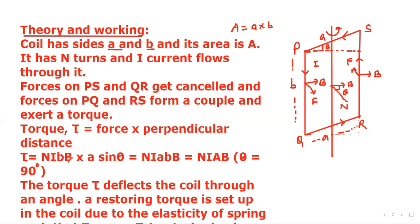So tau equals NIbB times a sine theta. Theta is taken as 90 degrees, so NIaB times capital B. But ab represents the area of the coil, so NIAB. Now the torque deflects the coil through an angle alpha.